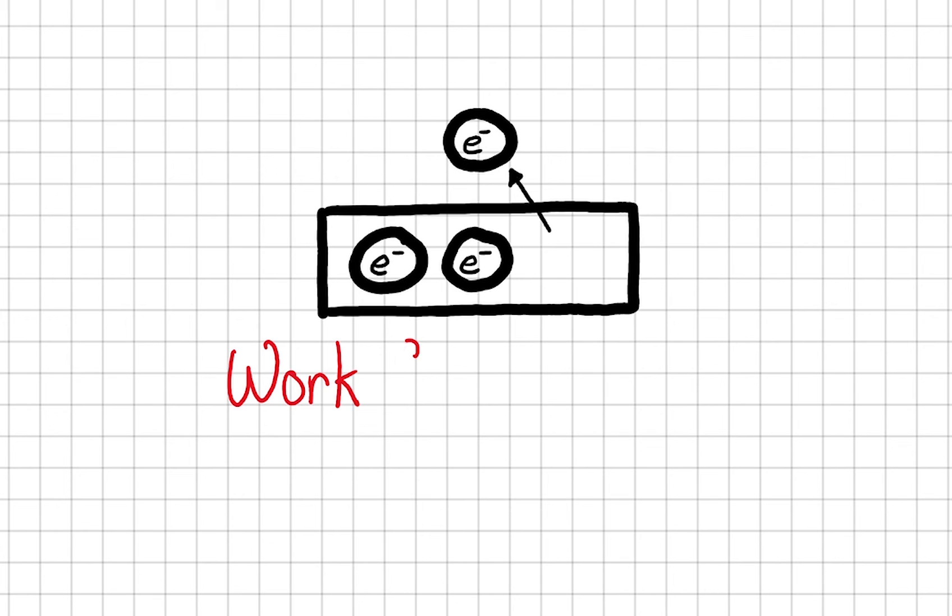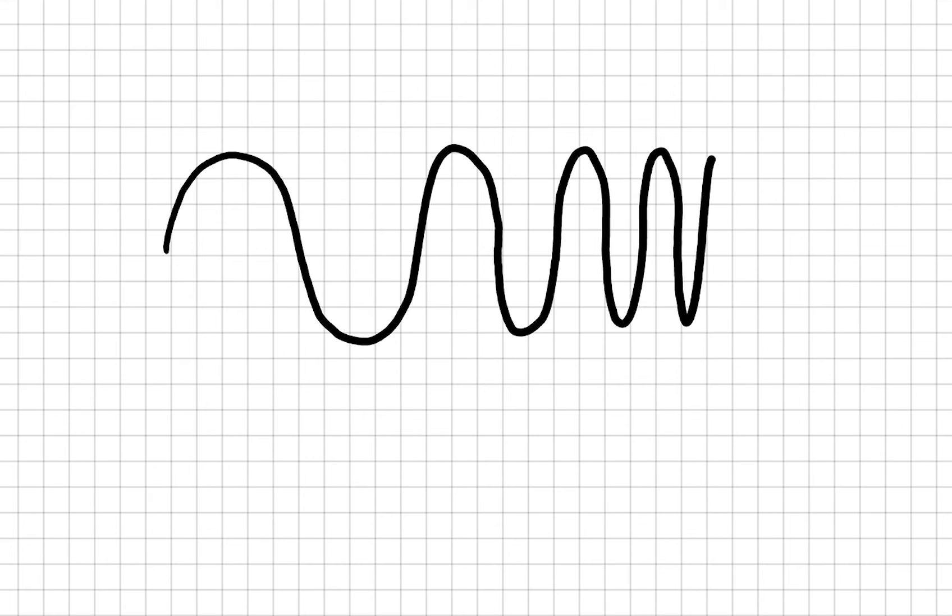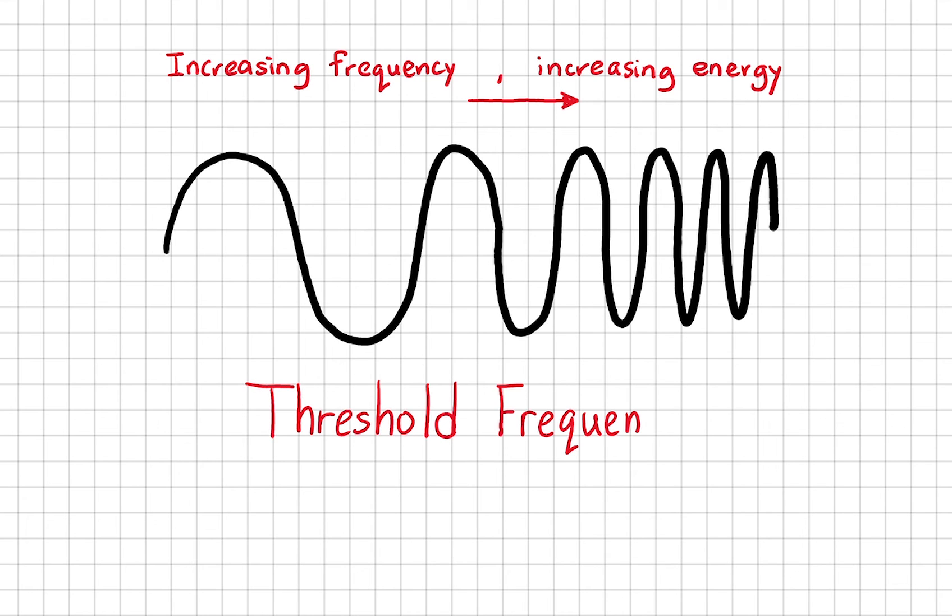The minimum energy required to liberate an electron from a metal is known as the work function. And since we know that when we talk about EM waves, frequency is proportional to energy. That's why we can say that if there is a minimum energy required, there is a threshold frequency.